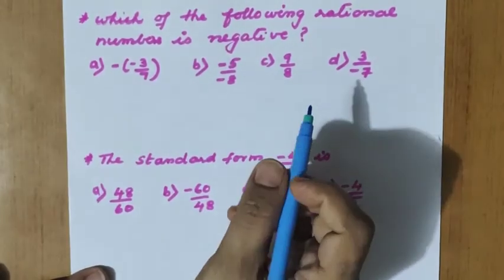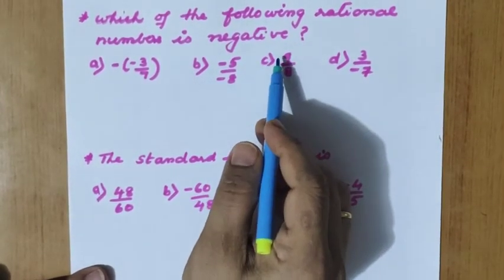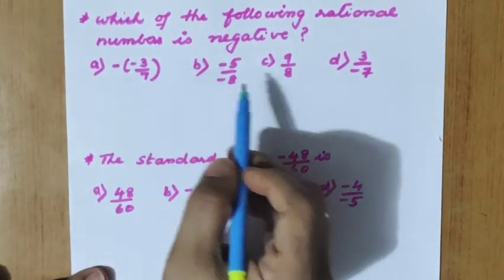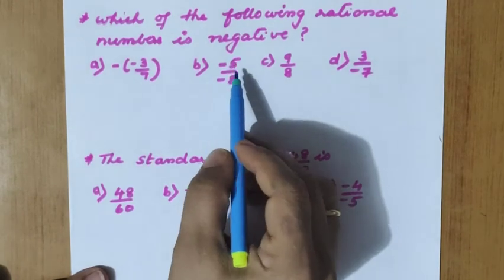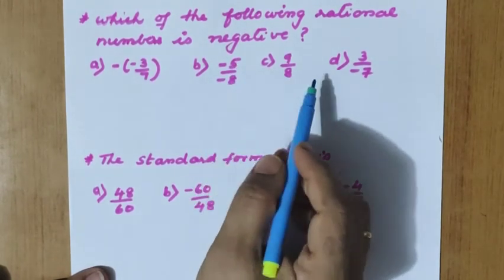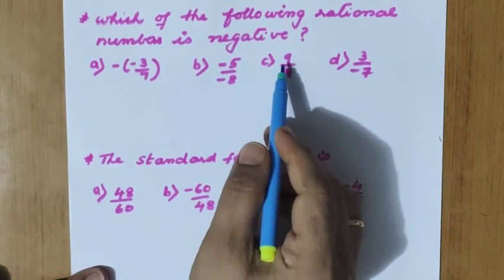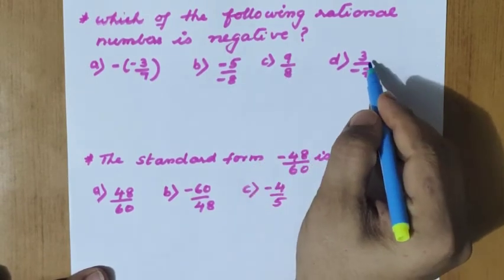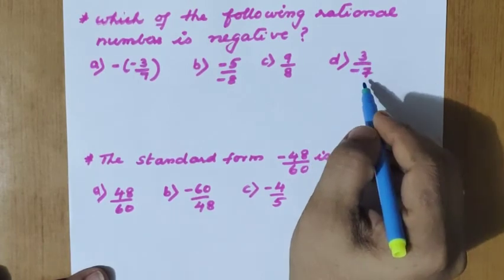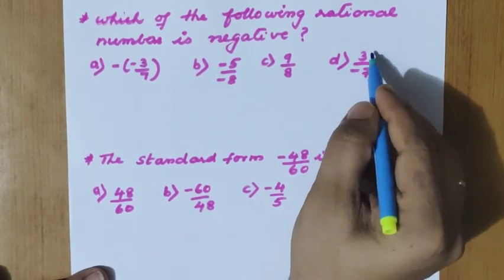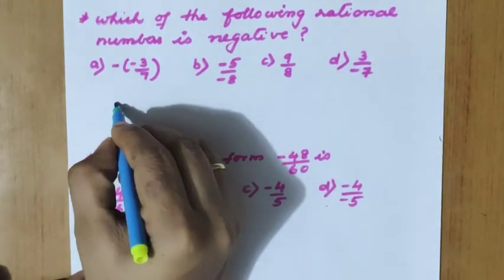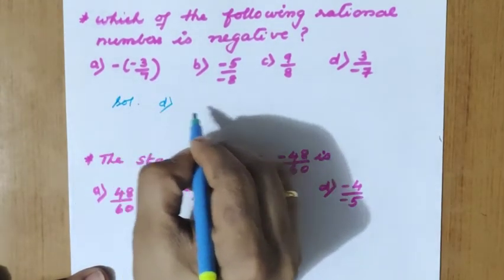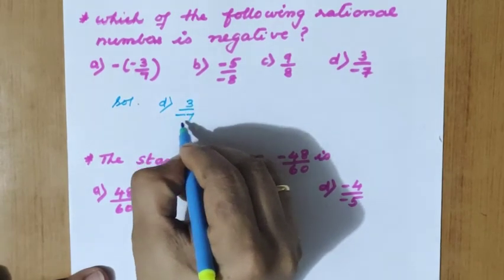Example: Which of the following rational numbers is negative? Minus of minus 3 by 7 equals positive 3 by 7 — not negative. Minus 5 by minus 8 is also positive. 9 by 8 has both numerator and denominator positive — positive rational number. 3 by minus 7 has a positive numerator and negative denominator, so it is a negative rational number. The answer is option D: 3 by minus 7.